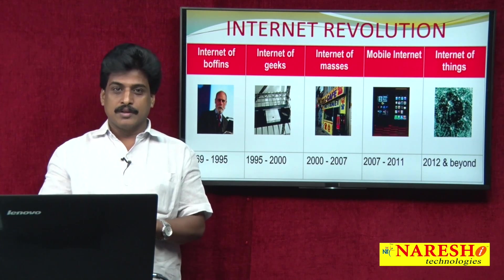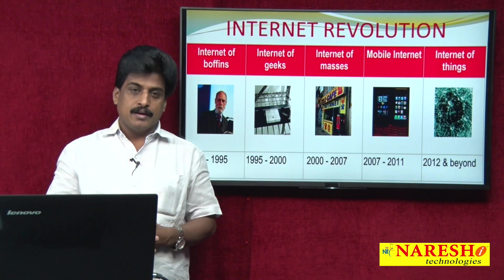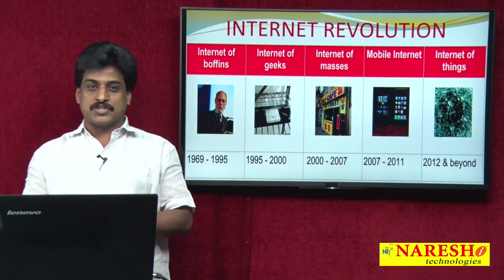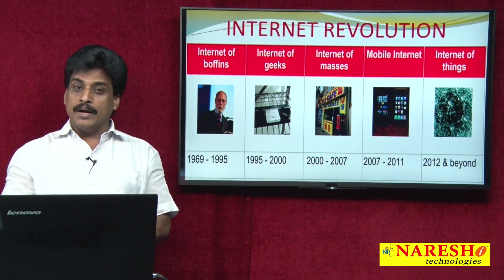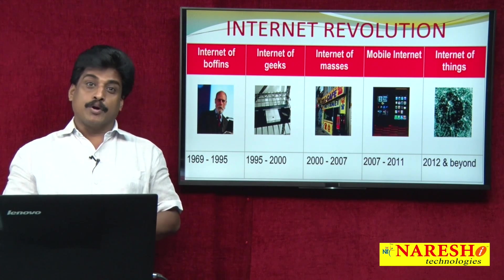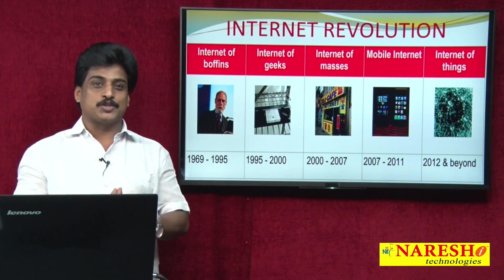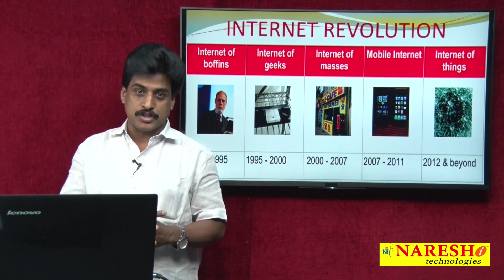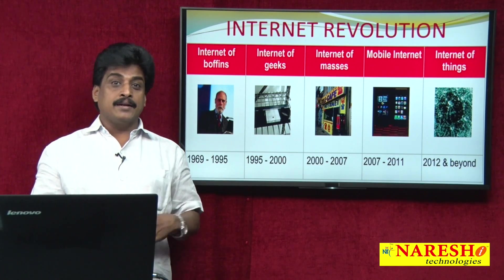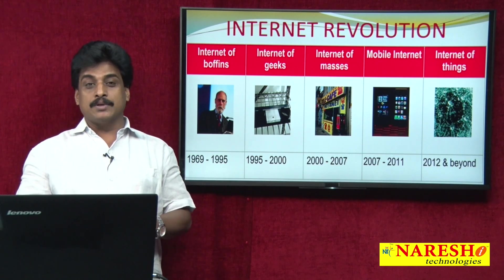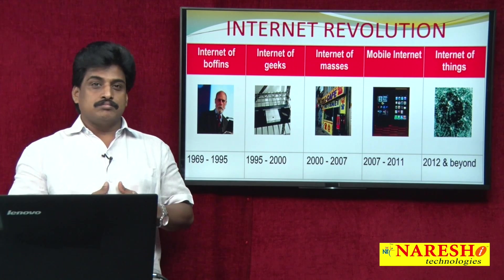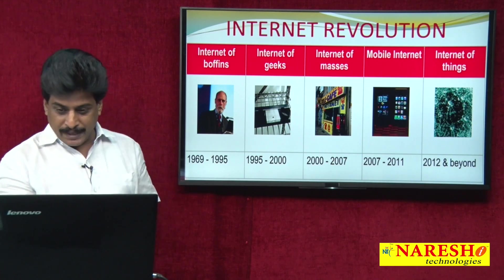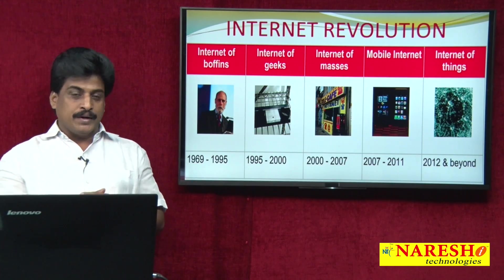Mobile internet brought generations of connectivity: 1G was completely analog, 2G was digital, 3G offered multimedia services, 4G provided wireless broadband connectivity — also known as Long Term Evolution (LTE). 5G stands for International Mobile Telecommunications, and 6G involves air fiber technologies. From 4G onwards, a new term emerged: Internet of Things — IoT — around 2012 and beyond.